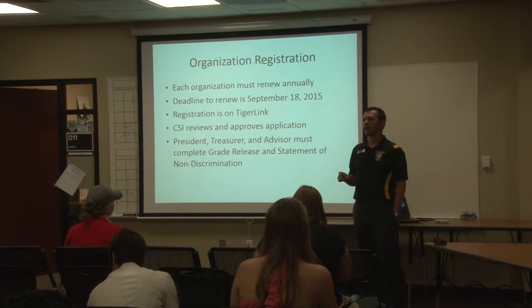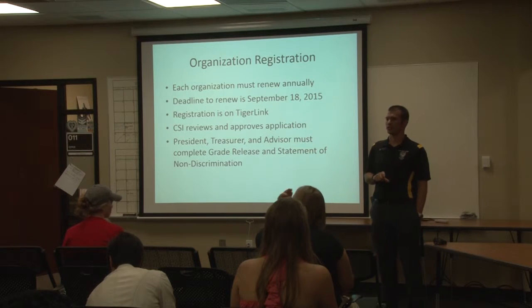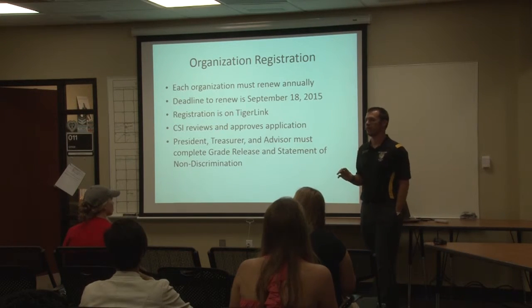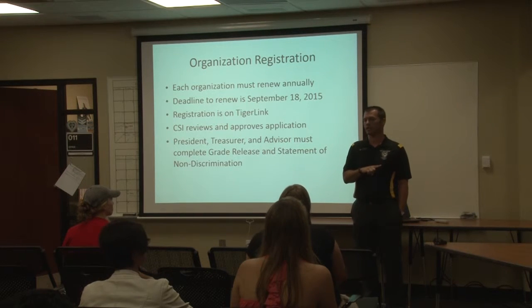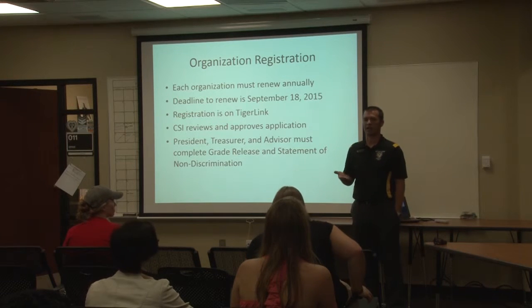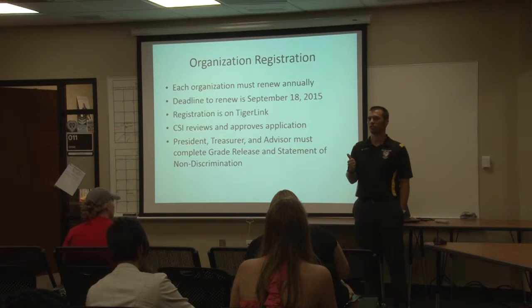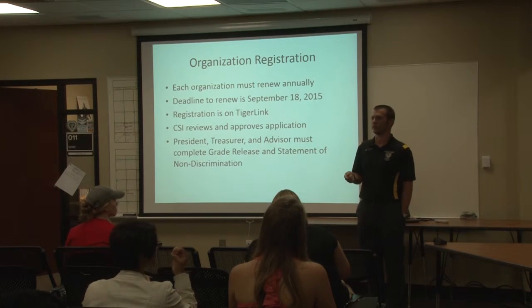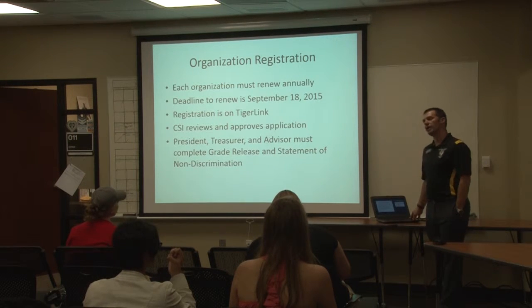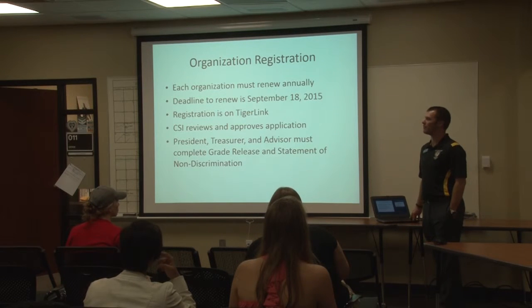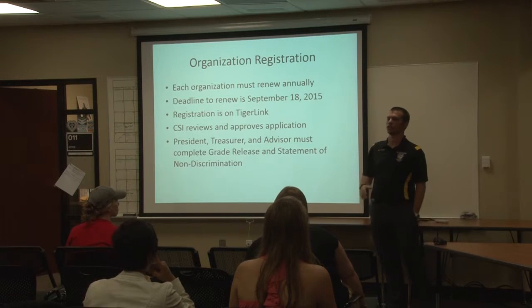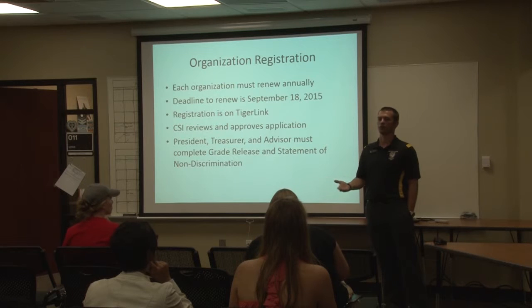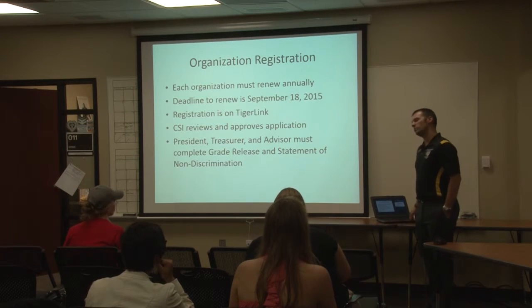Once you've made sure you've met all the requirements and have your officers elected and faculty and staff advisor in place, you will submit the registration form on TigerLink. After you submit it, it comes here to the CSI. I review the information, make sure it's complete, and then Brittany, our administrative assistant, sends out the notification that your application has been accepted along with links to the non-discrimination and grade release forms. Once those are submitted, you'll get a final email confirming you're fully approved for the academic year. For new student organizations, you don't have to meet the September 18th deadline — we want organizations to be able to form whenever they meet the requirements. But renewing groups must hit that deadline.